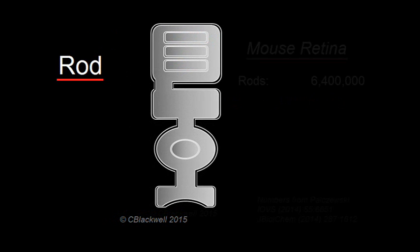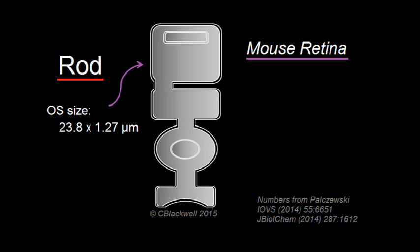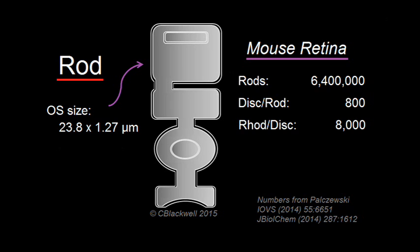What kind of numbers are we talking about? In an average mouse retina, there are 6.4 million rods. The outer segment has a length of 23.8 microns, with each outer segment containing, on average, 800 disks. Each disk contains about 8,000 rhodopsin molecules, which coincidentally works out to 6.4 million rhodopsin molecules per rod. Other sources give slightly different calculations, but it is still a very large number.